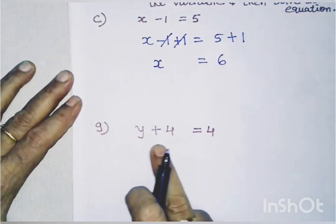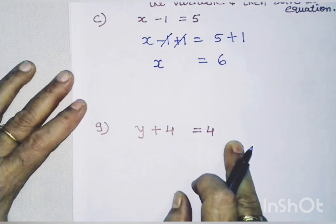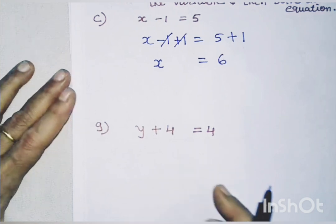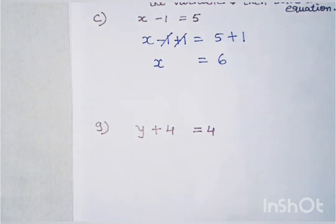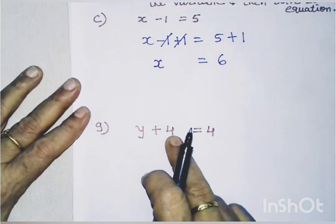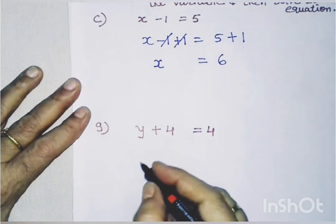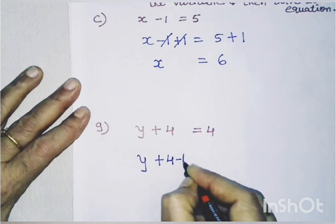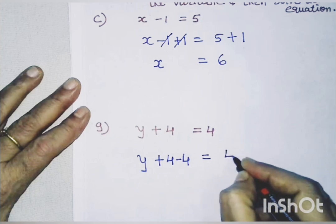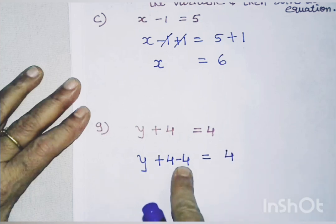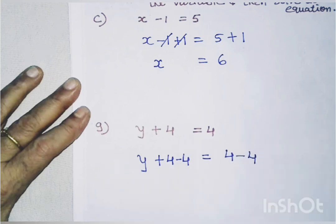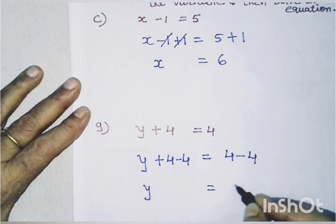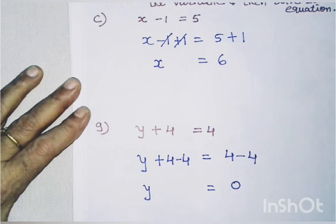The next equation is y plus 4 equals 4. We need to subtract 4 from both the sides. So y plus 4 minus 4 equals 4 minus 4. Plus 4 and minus 4 cancel, giving y equals 0.